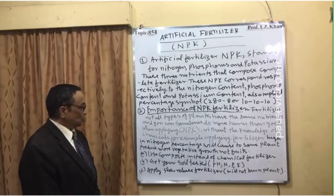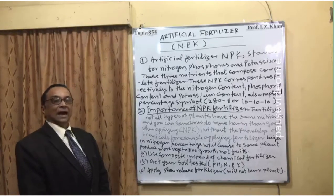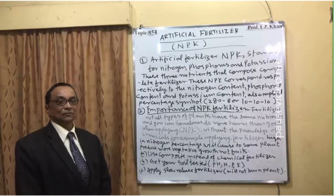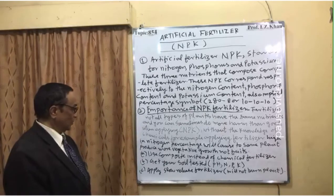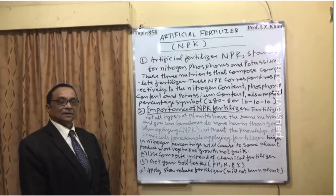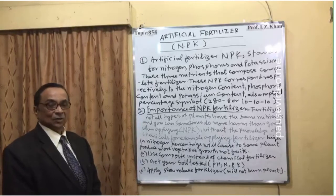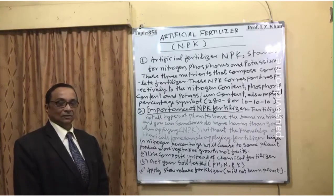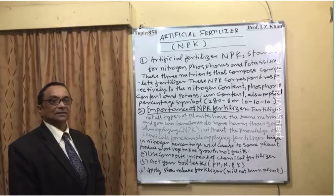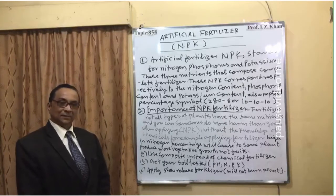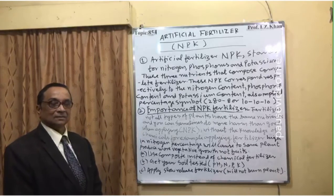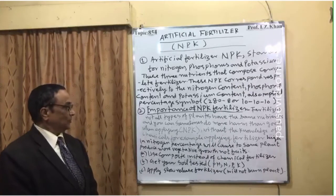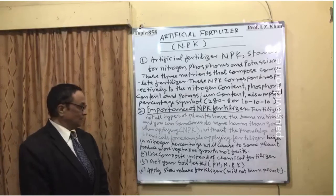Use compost instead of chemical fertilizer when possible, and always go for a complete balanced fertilizer containing the same required percentage of nitrogen, phosphorus, and potassium. Get your soil tested — check its pH value: whether it is alkaline, neutral, or acidic. This will help you know which type of fertilizer will be effective, since some fertilizers are not effective in acidic soil and some are not effective in alkaline soil.